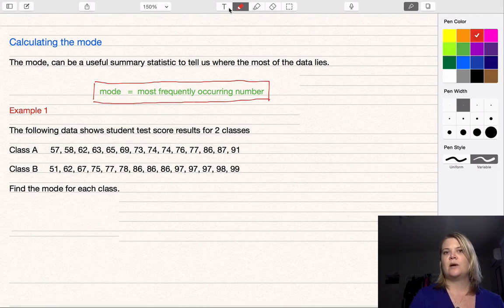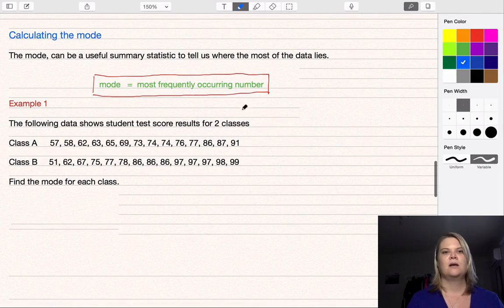You can have more than one mode and that's okay. You just list both of them down, but they both need to have the same number of times occurring.